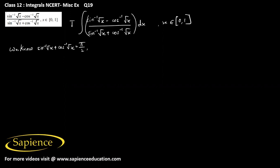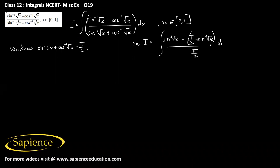Let's call this integral as I. So this integral I can be written as the integral of sine inverse root x minus cos inverse root x — where cos inverse root x can be written as pi by 2 minus sine inverse root x — all divided by pi by 2, into dx. Therefore this integral I can be written as the integral of 2 by pi into 2 sine inverse root x minus pi by 2, into dx.